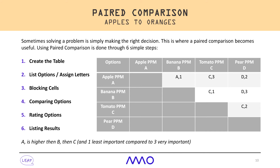Once you've assigned a number to each letter, you can rate the options by adding up the totals. For example, option C has values of three, one, and two, totaling six — meaning Tomato PPM option C is the most desirable. From this example we've identified that Tomato PPM option C is the best decision.